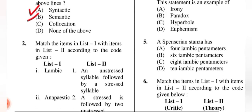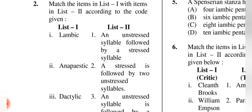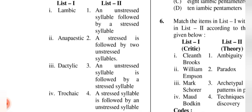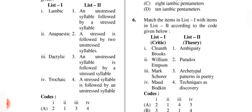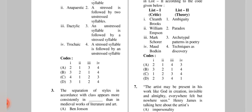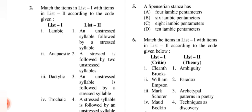Question 2: Match items in List 1 — iambic, anapaestic, dactylic, trochaic — with List 2. Actually, no option is entirely correct here; it is an error by the NET authority, so marks were given to all candidates. You can do your own research to verify.